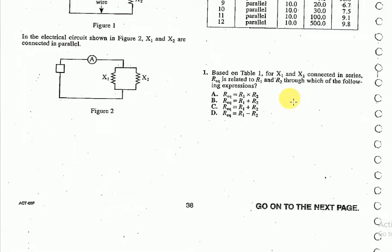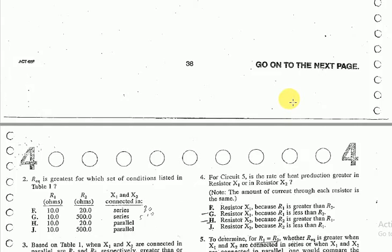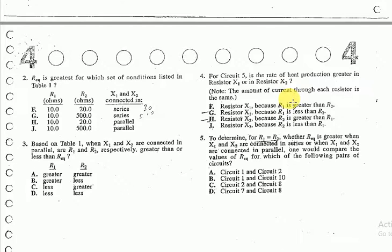Since R2 equals 100 ohms, we know that since resistance is greater, the amount of heat production also would be larger for resistor X2.